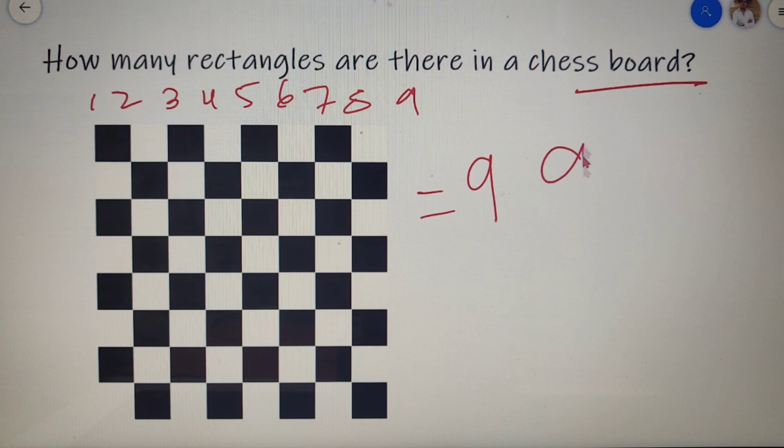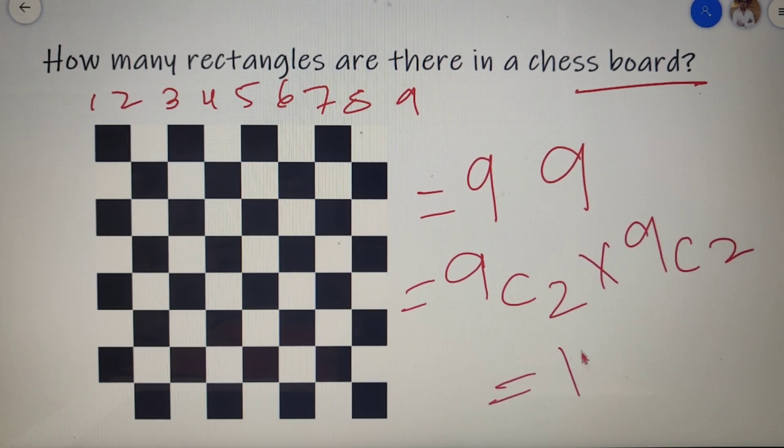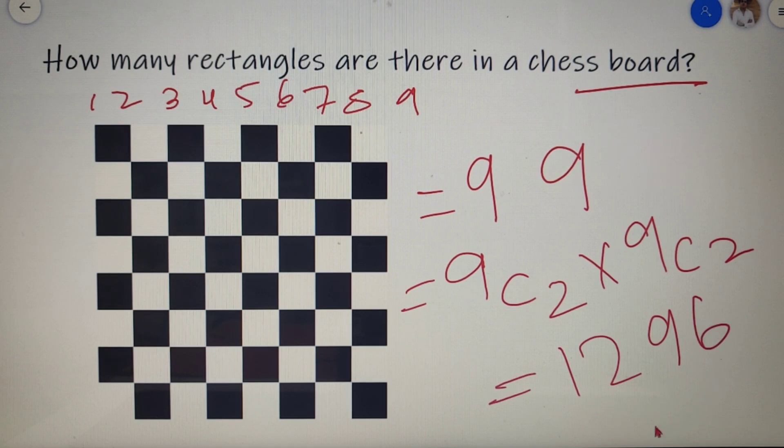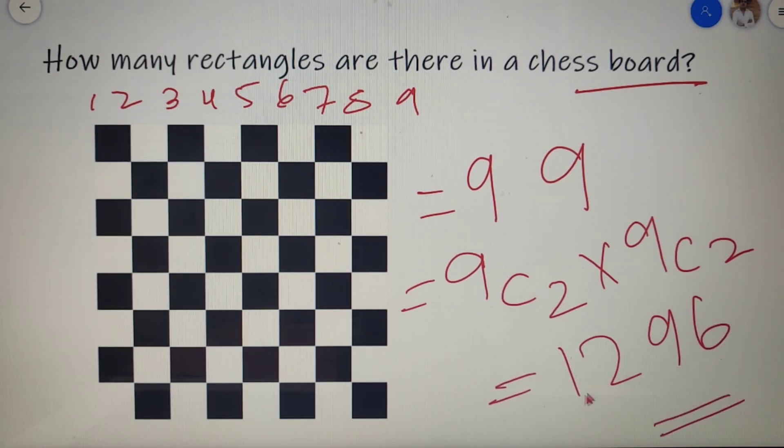So the number of rectangles in a chess board will be 9C2 into 9C2 which is equal to 1296. So we have 1296 rectangles in a chess board.